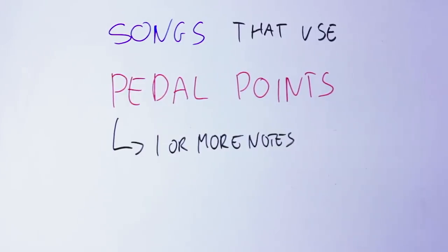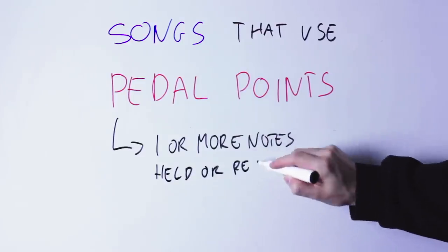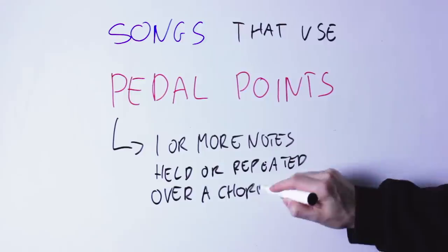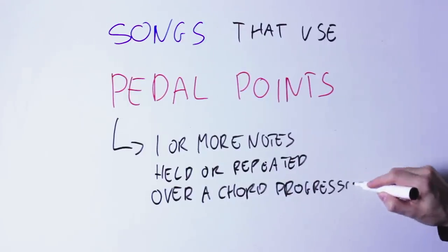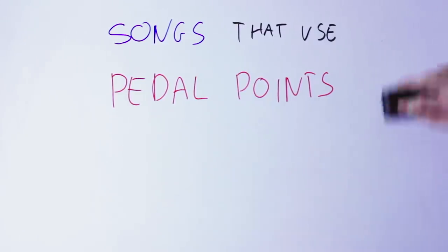A pedal point is one note, or more notes, held or repeated over a chord progression. In other words, you just choose one note, then you play the same note, and every time the chord changes, you either hold this note or repeat it. Since the note is the same but the chord is changing, the very same note will acquire a different meaning with every changing chord.